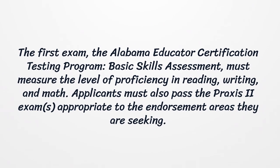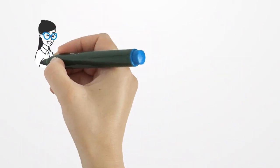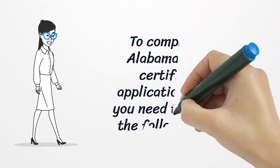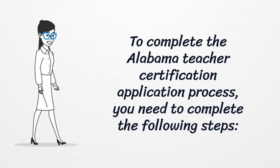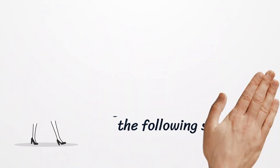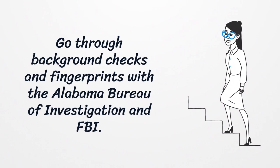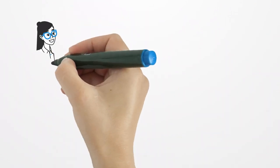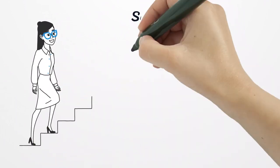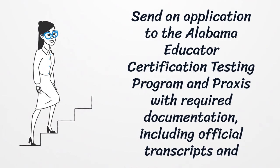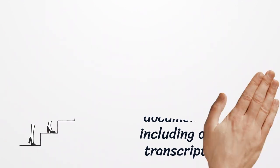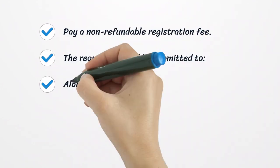Applicants must also pass the Praxis exam appropriate to the endorsement areas they are seeking. To complete the Alabama Teacher Certification Application Process, you need to complete the following steps: go through background checks and fingerprints with the Alabama Bureau of Investigation and FBI. Send an application to the Alabama Educator Certification Testing Program and Praxis with required documentation, including official transcripts and verification of test results, and pay a non-refundable registration fee.